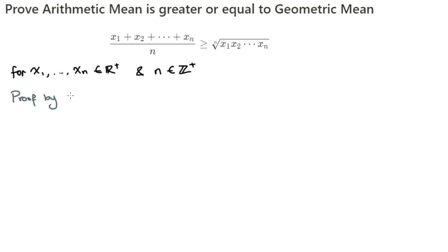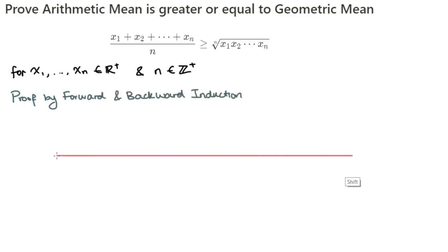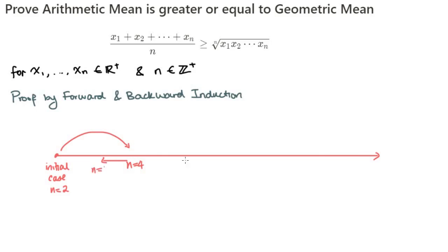We're going to prove this inequality using backwards and forwards induction, where we start with n equals 2 as the initial case and prove that it's true for n equals 4, n equals 8, and then we come back to prove the cases in between.